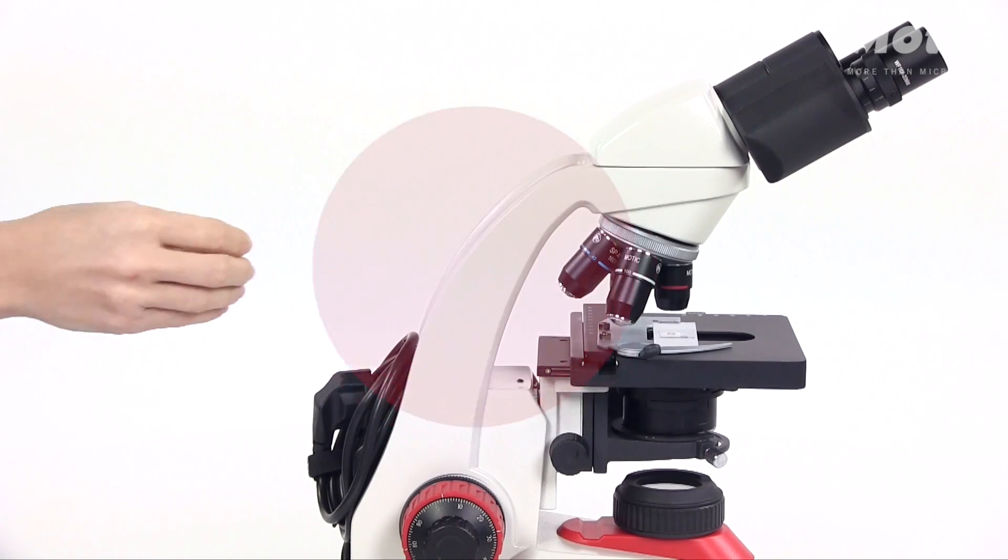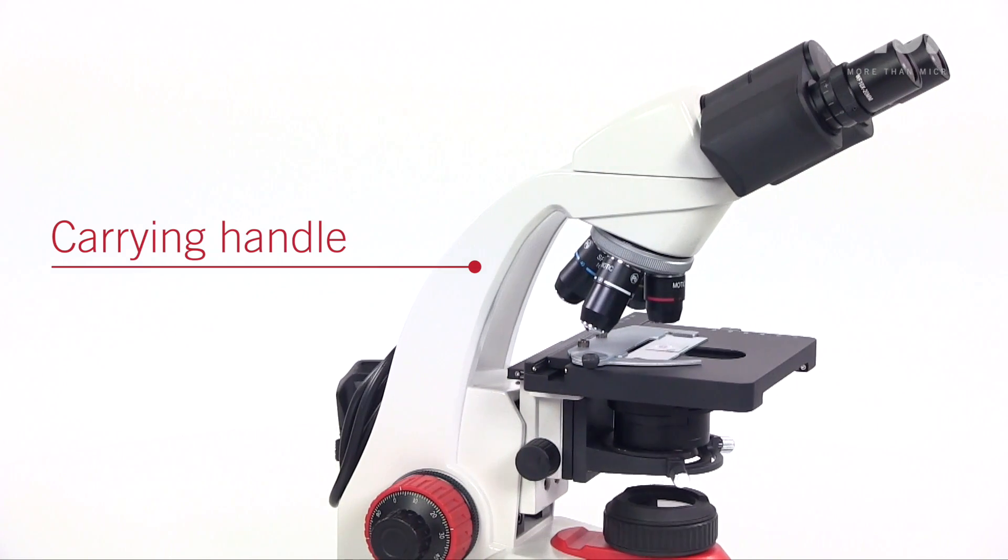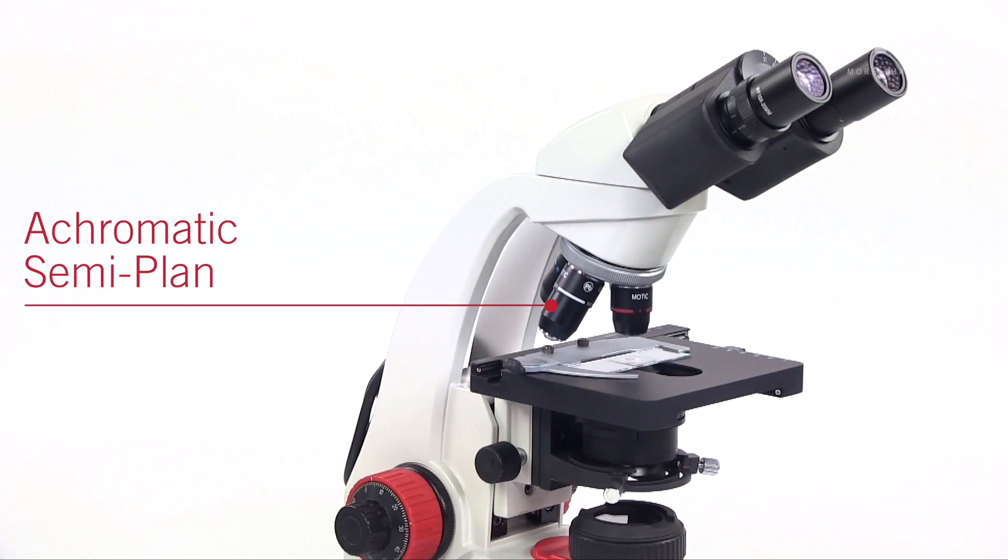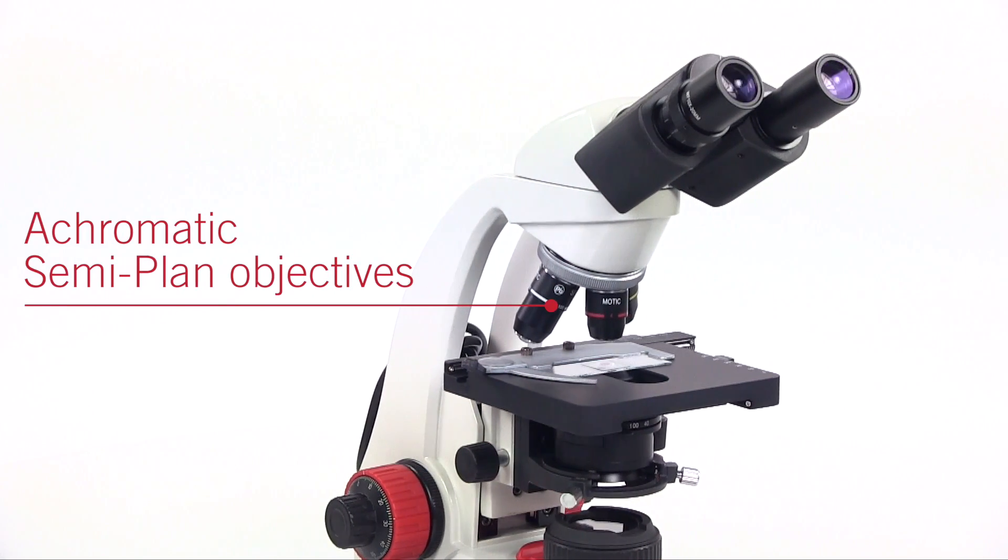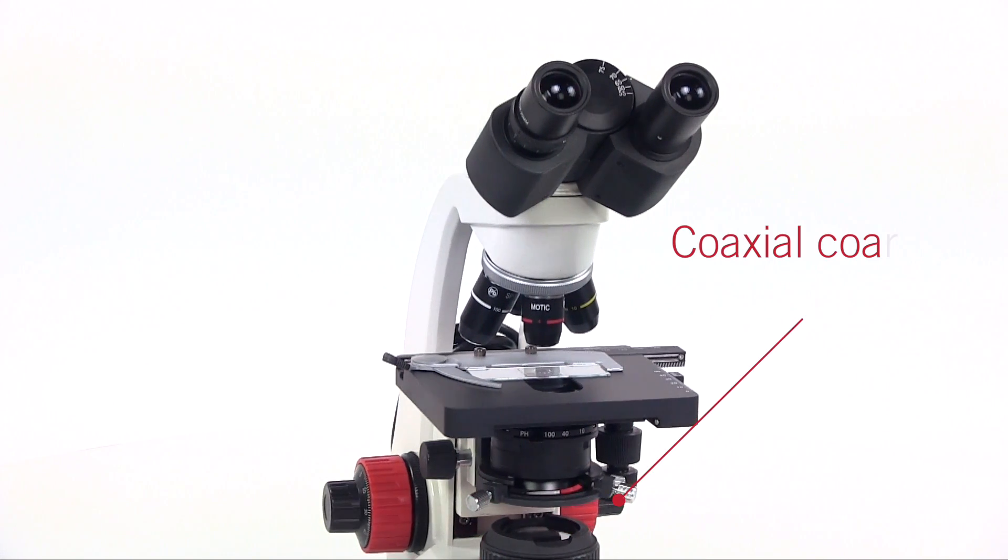The characteristics that stand out in the Red 200 series are its practical carrying handle, achromatic semi-plan objectives which improve the level of optical performance of this range, and the coaxial port and fine focusing system.